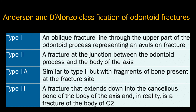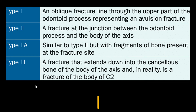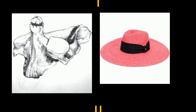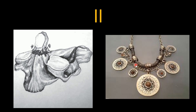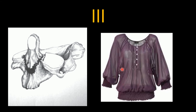The Anderson and D'Alonzo classification of odontoid fractures is one of the most widely used, with many modifications. The most widely used subtypes are Type 1, Type 2, Type 2a, and Type 3. Type 1 is a fracture of the tip only; Type 2 is a fracture at the neck of the odontoid; and Type 3 is a fracture through the body of the odontoid process.